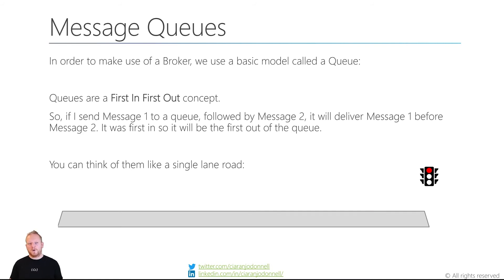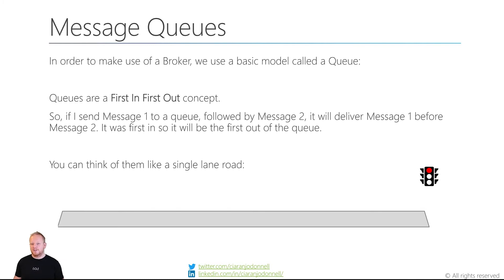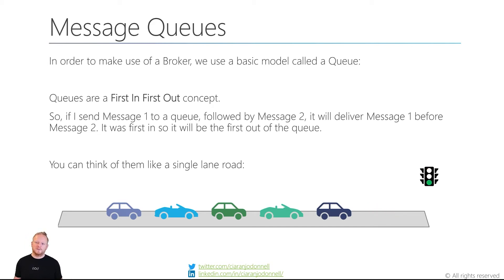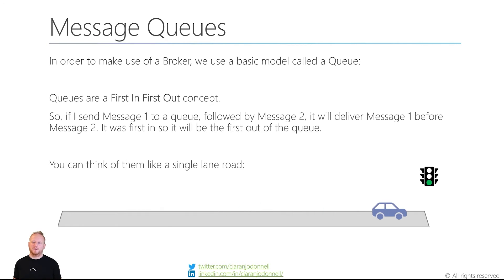To make good use of a broker, we want a good model for what actually happens. The basic communication structure when we use message brokers is a message queue. A queue — like when you're in a grocery store, or when you're doing programming with queues — is a first in, first out concept. If I send message one into a queue and then send message two, it should deliver message one before message two. I like to think of these as a single lane road analogy. The first car that comes into the road is at the front of the line, there's no overtaking, so all the cars queue up one after the other, and they leave that road in the same order they entered it.